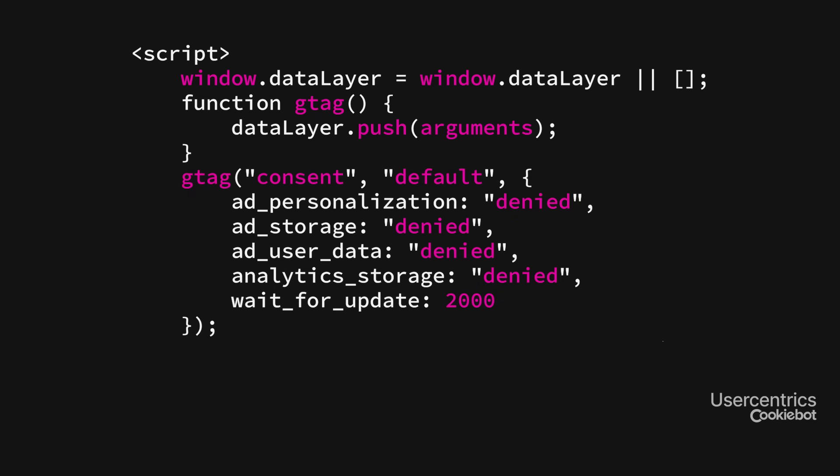Lines 5 to 11 set default states for the ConsentMode parameters. Depending on your local regulations, these parameters should always be set to denied. The wait_for_update parameter ensures that the CMP's ConsentMode signals are processed by the Tag Management System.